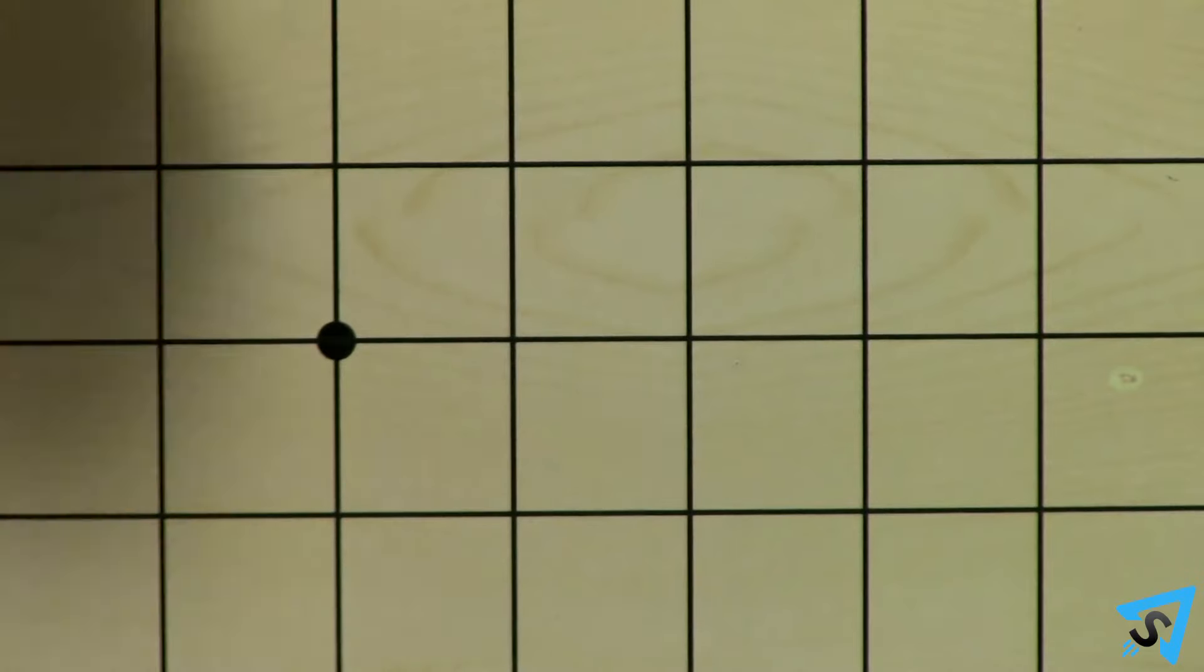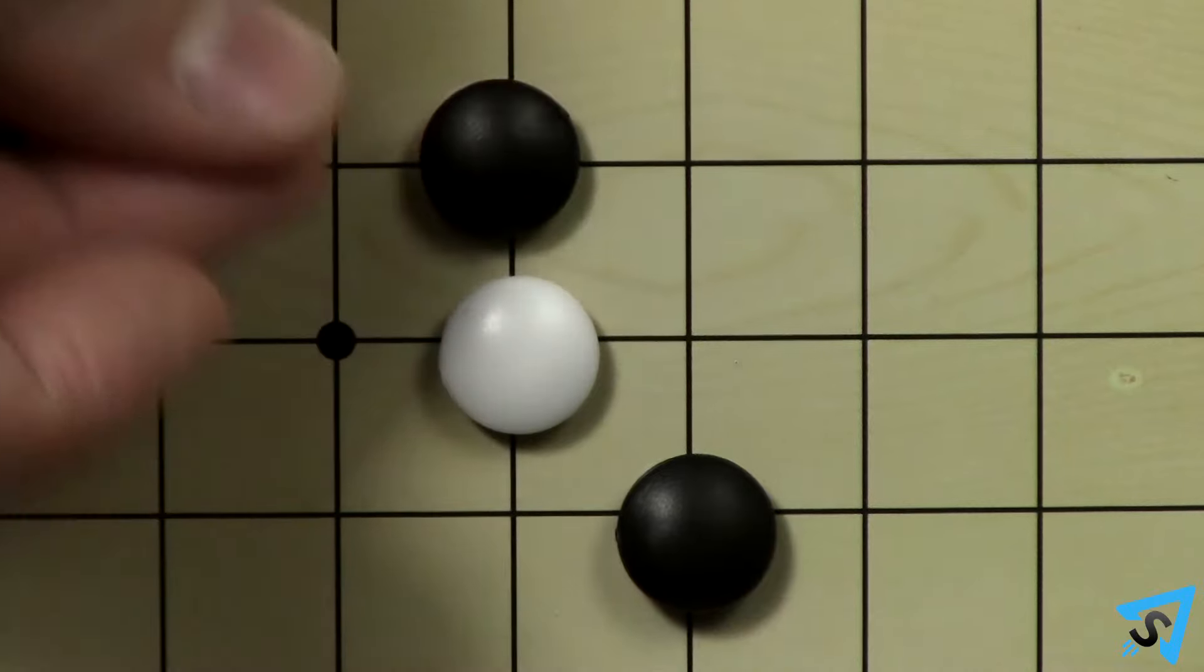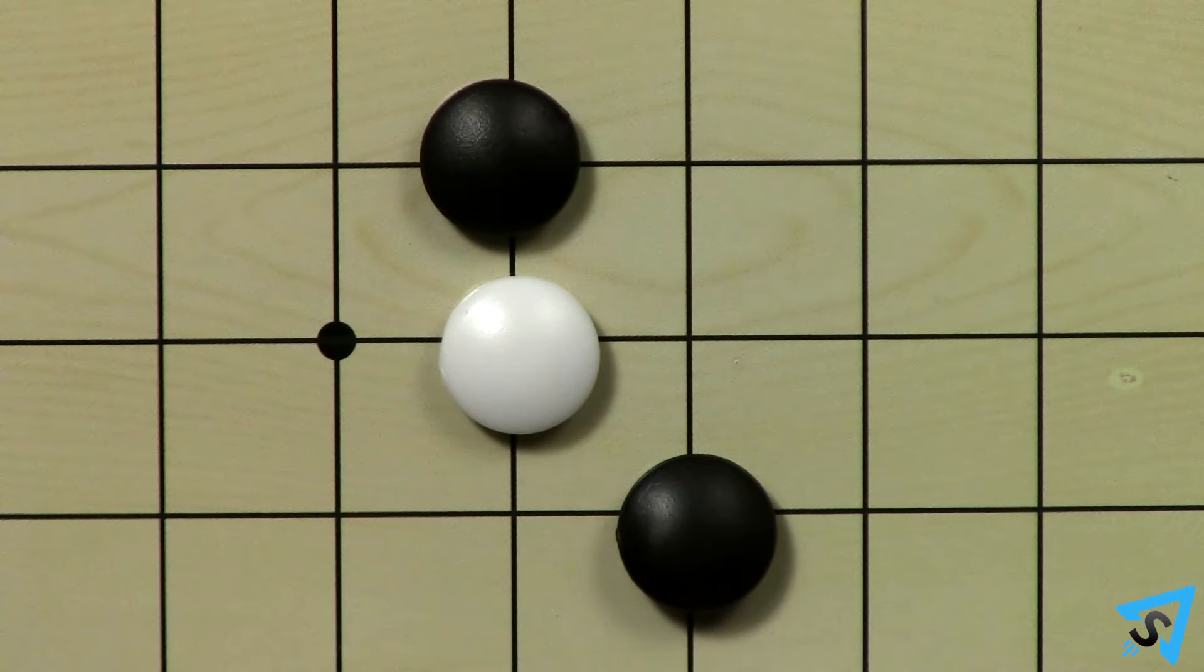A common variation to play with is the Swap 2 rule. With Swap 2, at the beginning of the game, the first player starts by placing three stones: two black and one white on the board.